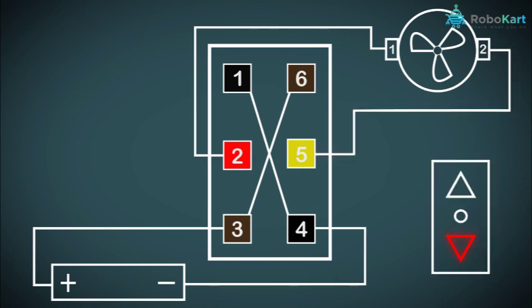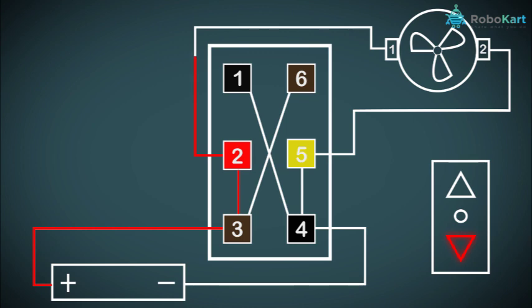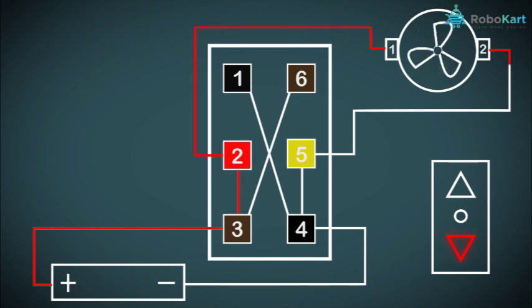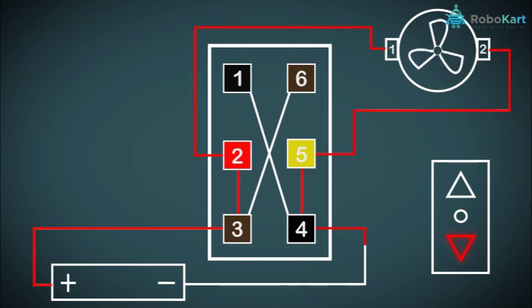When we press the switch in the downward direction, Terminal 2 and Terminal 3 of the DPDT switch will be connected, and Terminal 4 and Terminal 5 will be connected. At that time, the positive supply will be flowing from Terminal 1 of the motor and the motor will start moving in the clockwise direction.